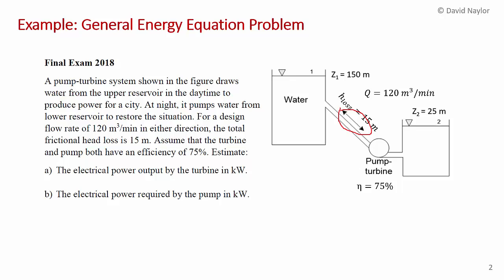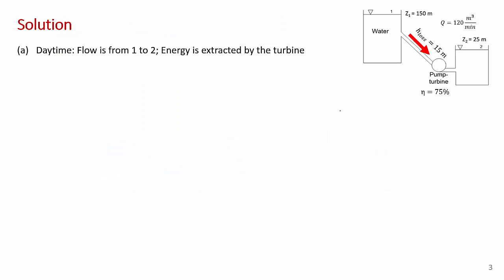You need to write the energy equations in a slightly different form. Here I've shown the problem statement again for the daytime situation — water flowing from the upper reservoir. We're going to call point 0.1 on the top of the upper reservoir and point 0.2 at the top of the water in the lower reservoir. These altitudes Z1 and Z2 are the elevations of the top surface of the water relative to some reference datum. In this case we're extracting energy with water flowing downhill, shown by a big red arrow, with a turbine operating at 75% efficiency.